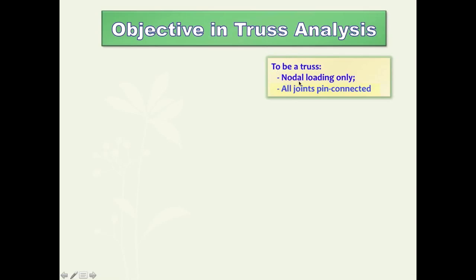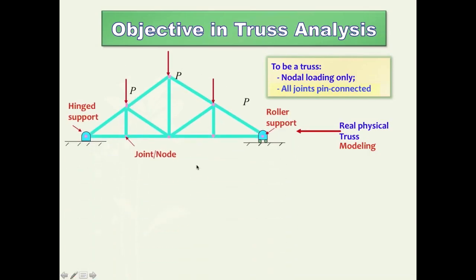What is the objective in truss analysis? The main objective, given that a truss only has nodal loads and all joints are pin connected, is as follows. Let me first show you a physical model of a typical truss. This is a real physical truss model demonstrating a 2D truss structure made of several elements, with pin-connected supports, members connected only at their ends, and loads acting only at the joints. The main objective of truss analysis is to find the forces in each member of the truss.